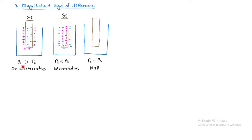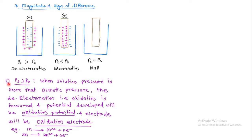To summarize: when solution pressure is greater than osmotic pressure, de-electronation takes place, meaning oxidation is favored and the potential developed is the oxidation potential. When solution pressure is less than osmotic pressure, electronation takes place. Solution pressure is the tendency of metal atoms to go into the solution as cations leaving behind electrons. Osmotic pressure is the tendency of cations in the solution to deposit on the metal electrode leaving behind electrons in the solution.